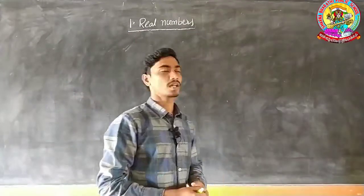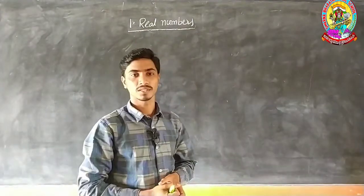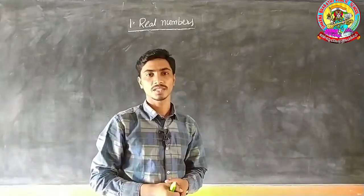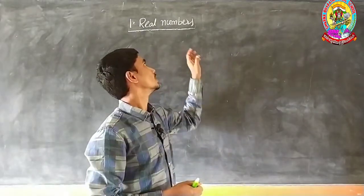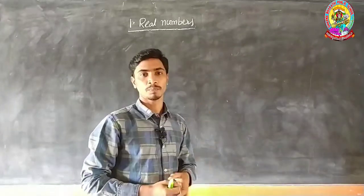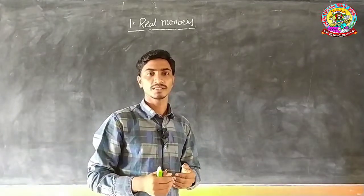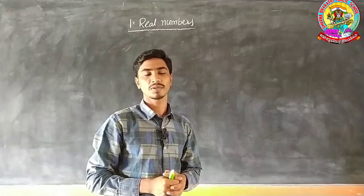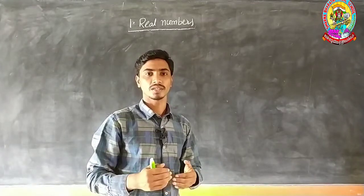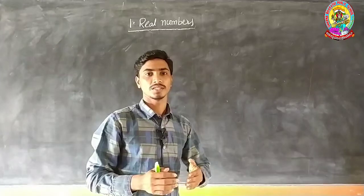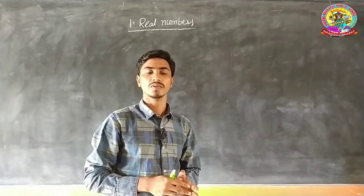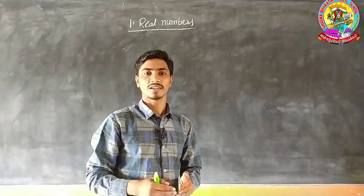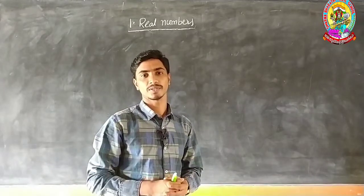In our first videos we have already learned about real numbers. In the first video we learned about logarithms. In the second video we learned about real numbers — how to determine the HCF and LCM using Euclid's division algorithm lemma, and then we learned about the theorems. Now we will learn how to prove that a given number is an irrational number.